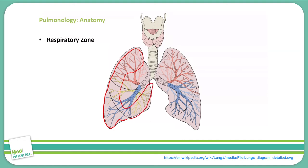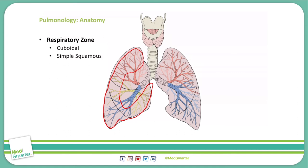This is where gas exchange occurs. Most of the time, these are made up of cuboidal cells, specifically in the respiratory bronchioles, but we do get to simple squamous cells in the alveoli.